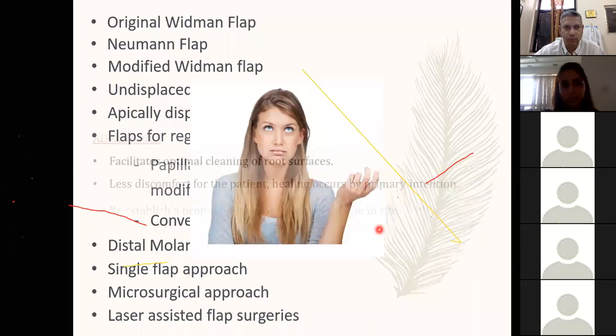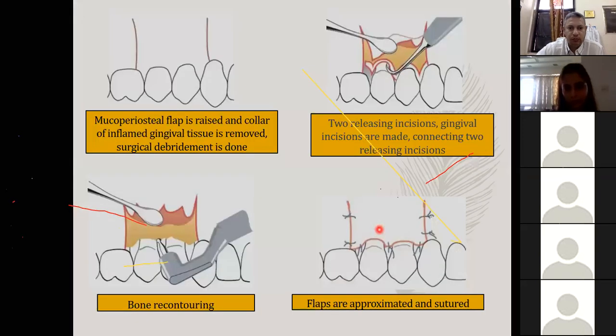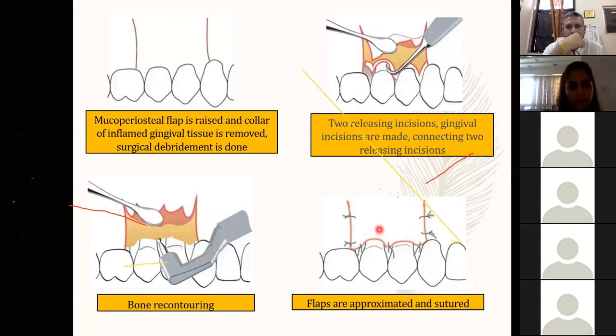The original Widman flap was described by Leonard Widman in 1918 in an article on treatment of pyorrhea alveolaris. He described full-thickness mucoperiosteal flaps aimed at removing pocket epithelium and inflamed connective tissue. Gingival incisions included removal of inflamed connective tissue with two releasing vertical incisions taken as mid-buccal incisions. They were reflected to gain about two to three millimeters of bone exposure. Bone recontouring was done, all infected granulation tissue was removed, and the flaps were approximated and sutured very close to the level of bone to achieve the least amount of probing pocket depth.